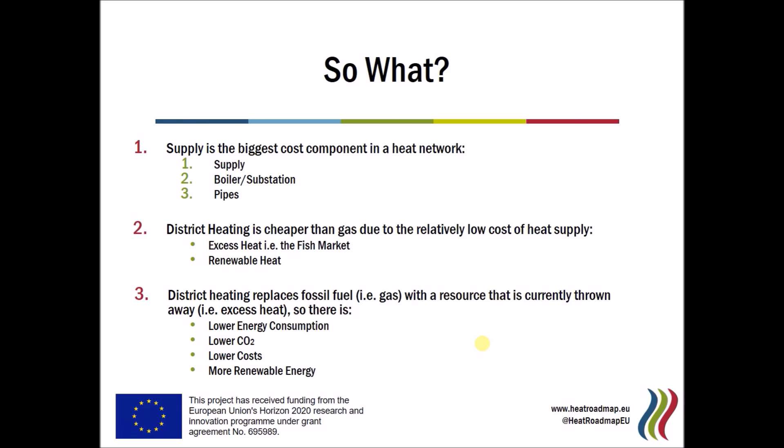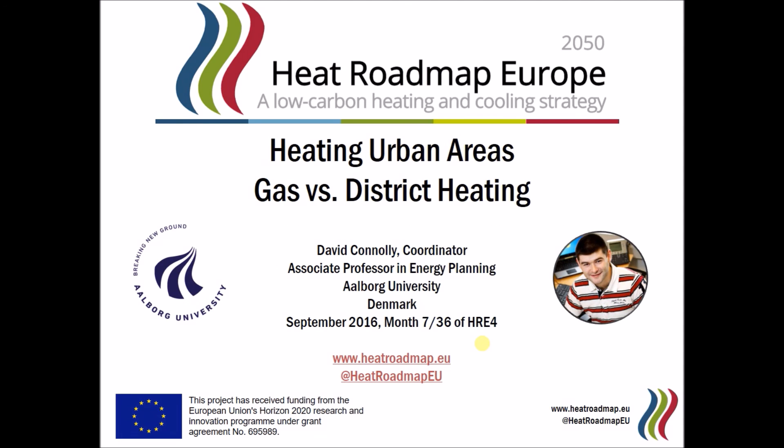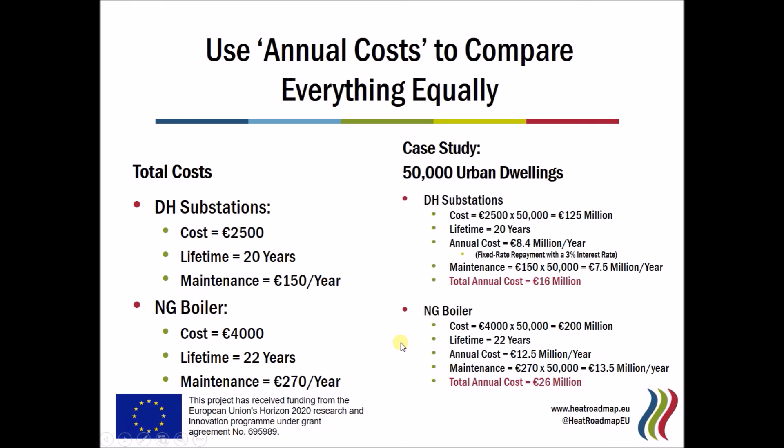Finally, it's not just about price. A lot of our advanced modeling in the Heat Roadmap Europe studies shows that by replacing a fossil fuel like natural gas with a product we currently throw away — excess heat to the fish market — we're not just saving money, but we're also lowering energy consumption, lowering carbon emissions, and enabling ourselves to use more renewable energy. So it's a package of benefits that make this such a good idea in the long run. Feel free to check out our website heatroadmap.eu — there are models, tools, maps, and data that might help you with your work. Please follow our Twitter or subscribe to our YouTube channel. Thanks for listening, and I hope you enjoyed the video about comparing natural gas and district heating.